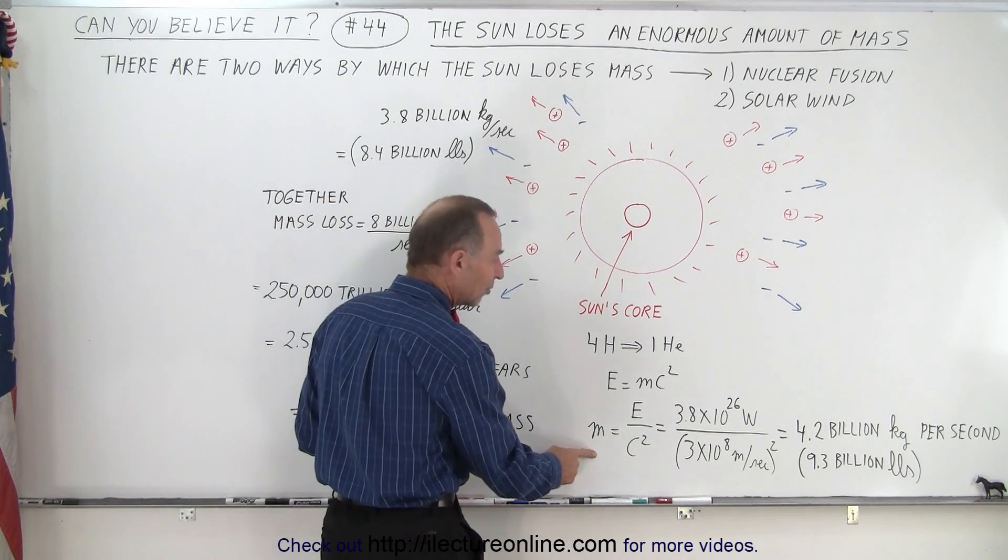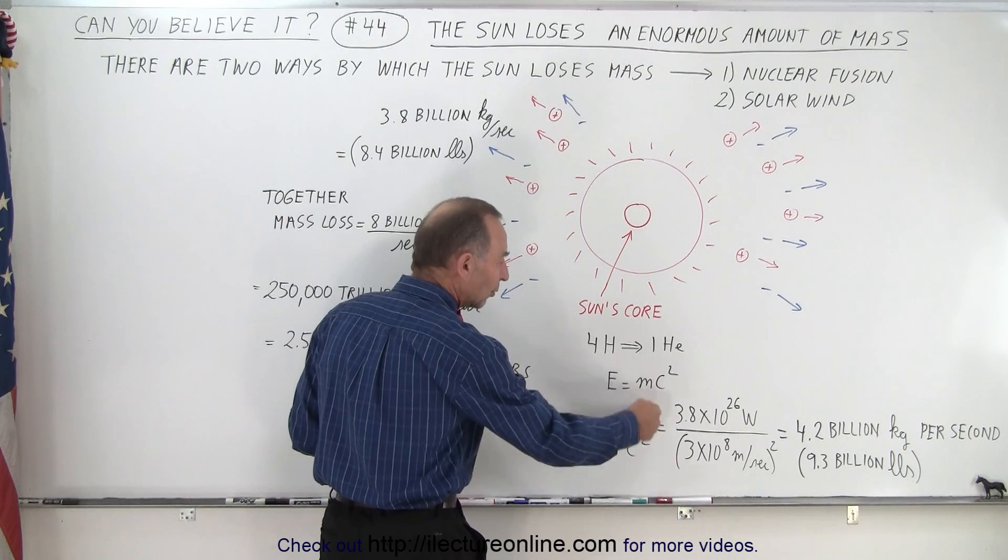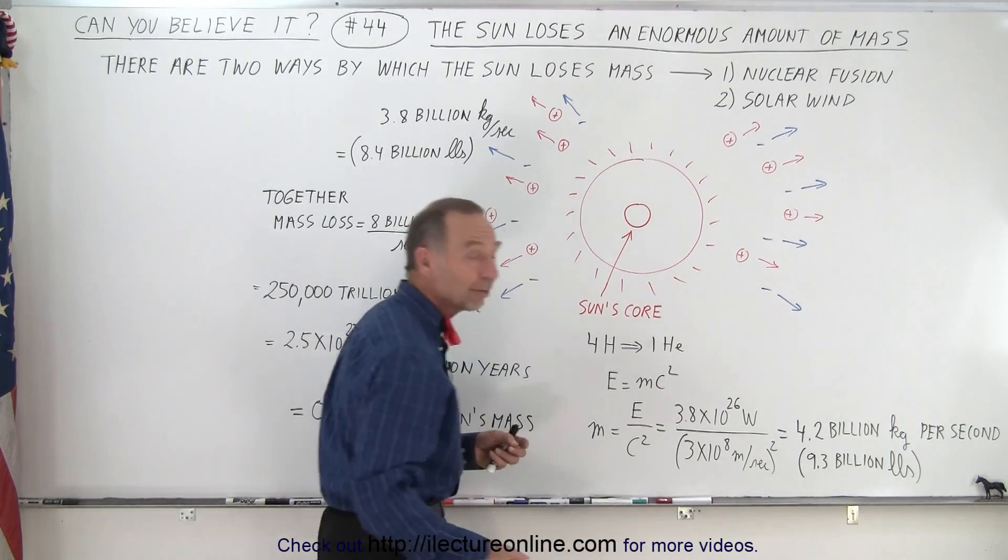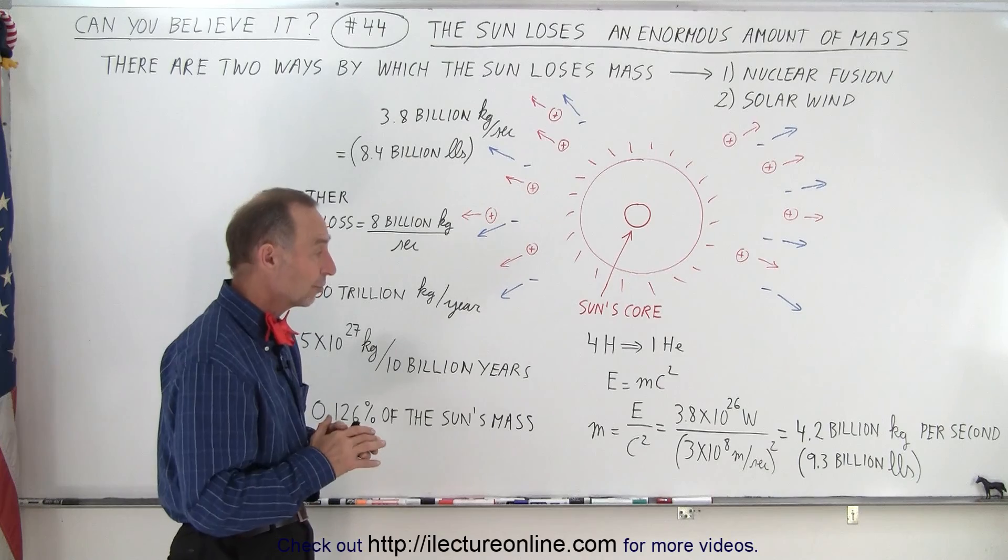The equation E equals mc squared relates the amount of energy generated to the amount of mass that had to be converted into that energy. When we solve that for mass, we see that the energy generated divided by the speed of light squared tells you how much mass is lost.